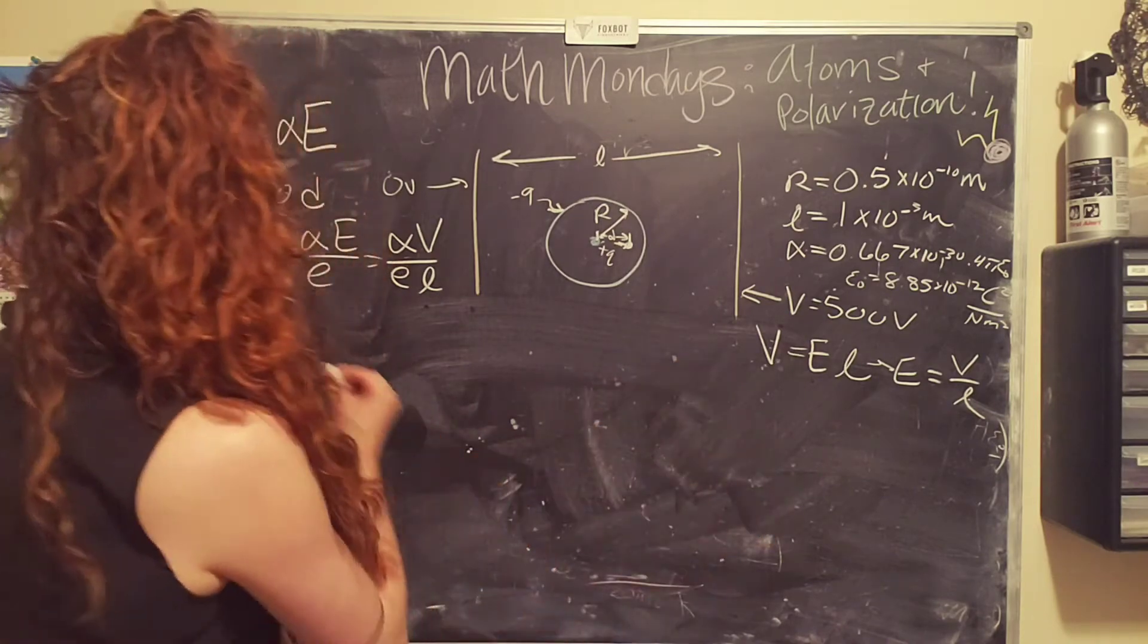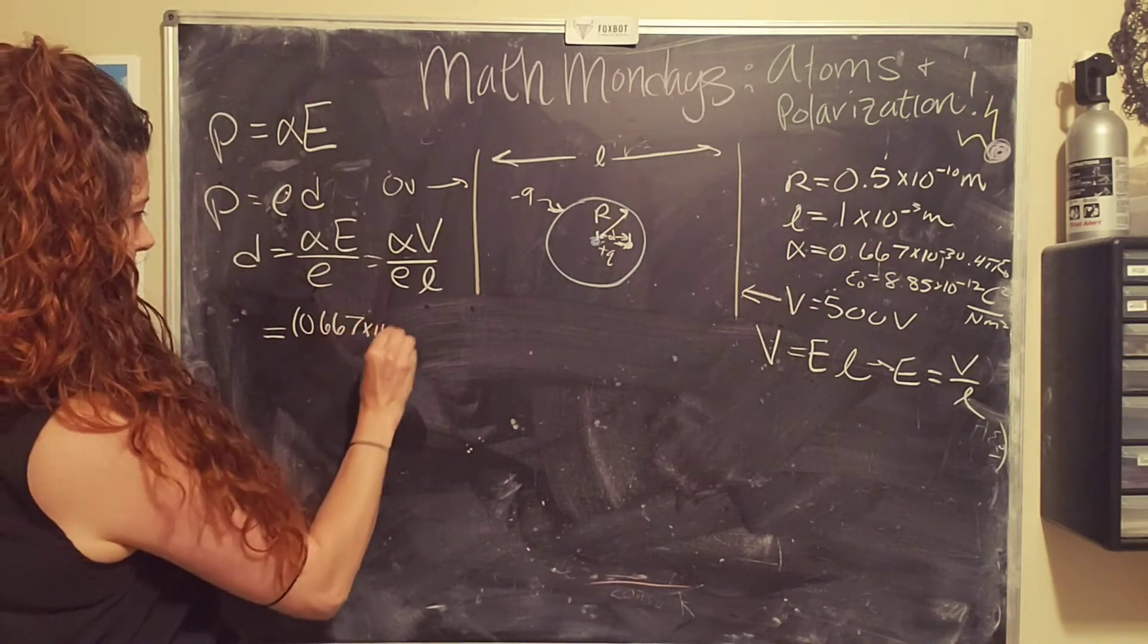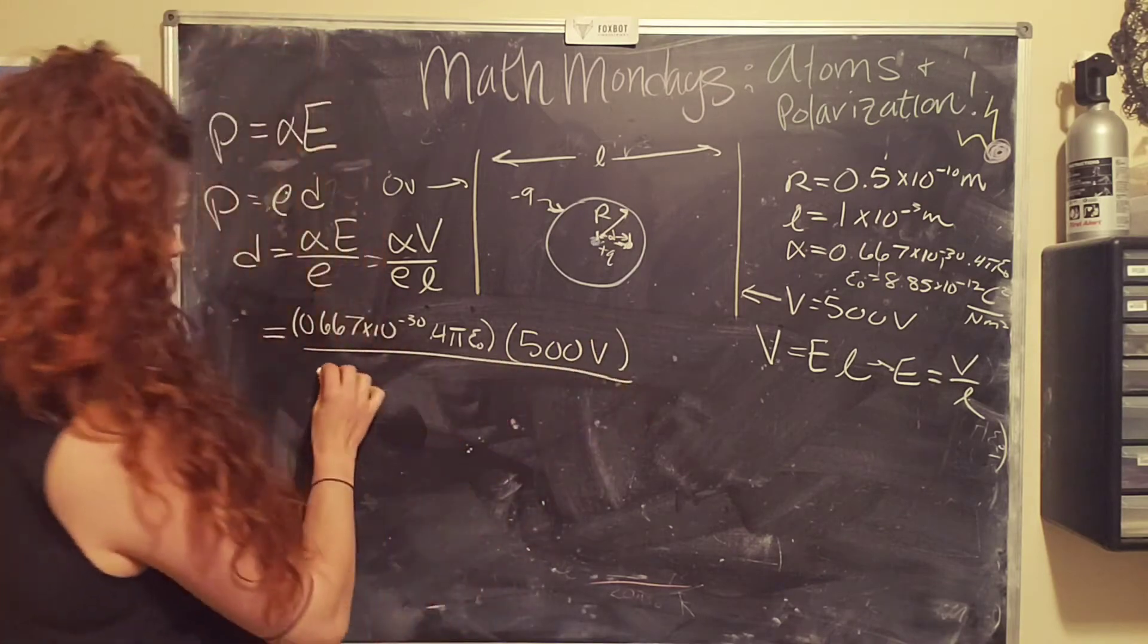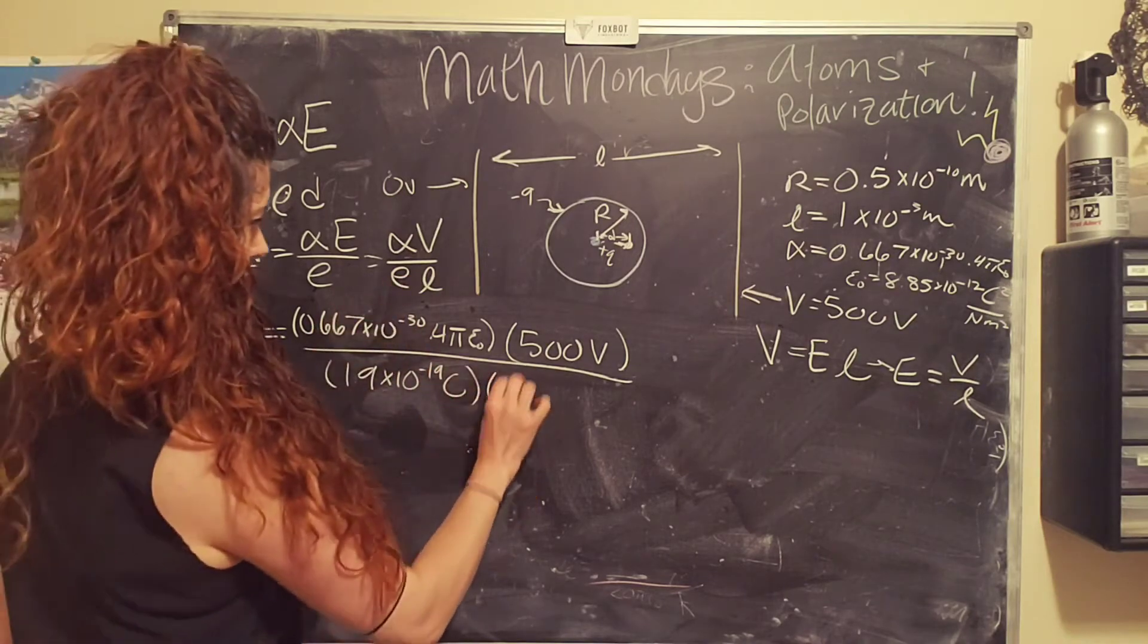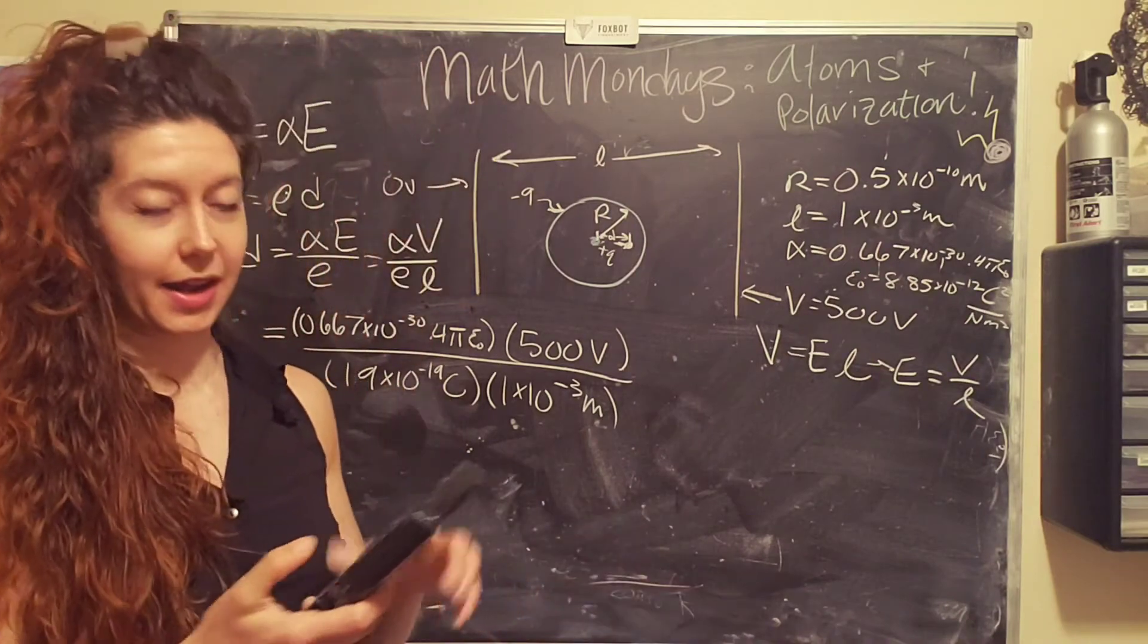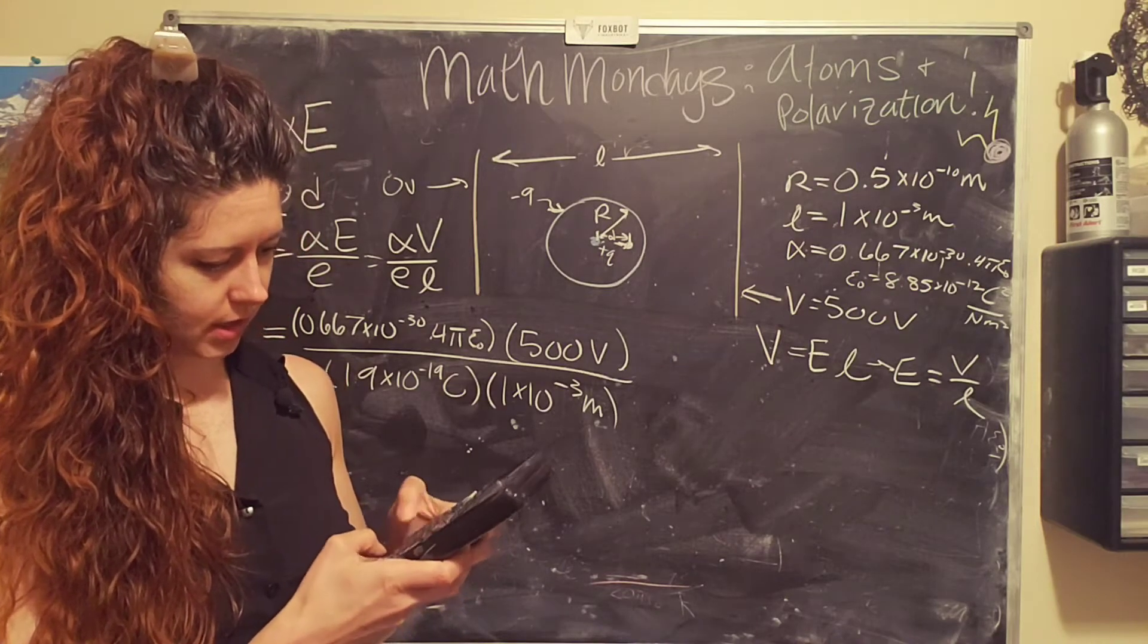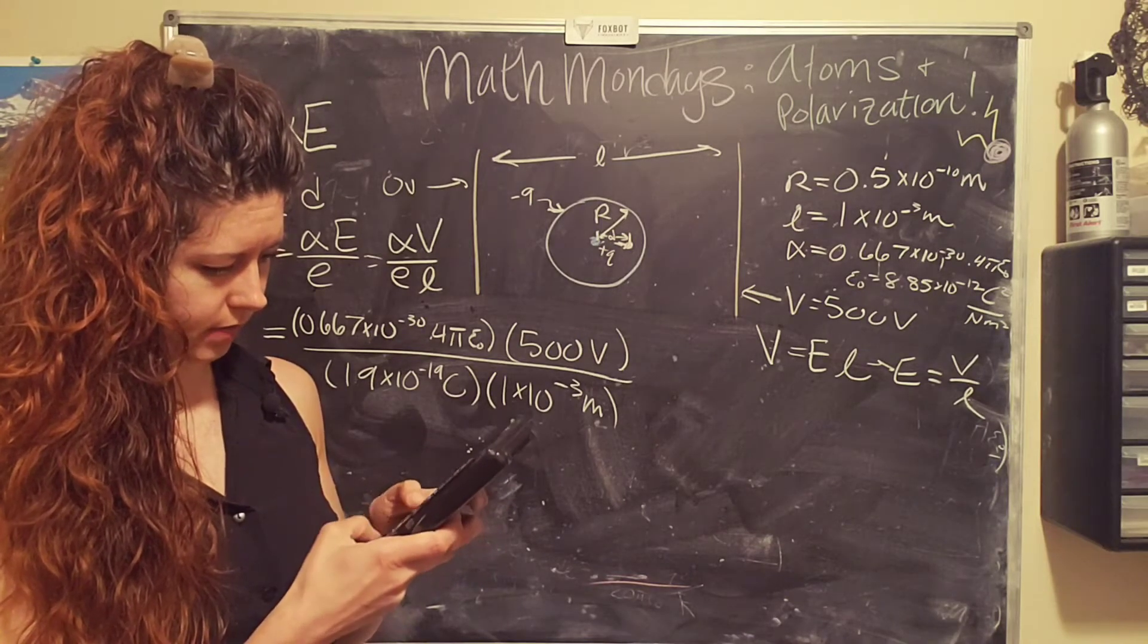And now we really just are plugging in numbers. And so what we're going to get is we're going to replace alpha with 0.667 times 10 to the negative 30th times 4 pi epsilon naught times the voltage of our capacitor, which is 500 volts, divided by the charge of an electron, 1.9 times 10 to the negative 19th coulombs, times the separation distance, which is 1 times 10 to the negative 3rd meters. Numbers, not just symbols. And I already calculated this, but we're going to run through it again. So get out your handy dandy calculators and do it with me.